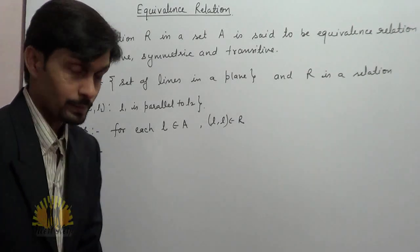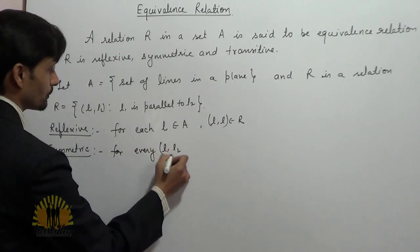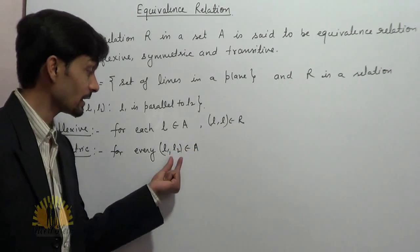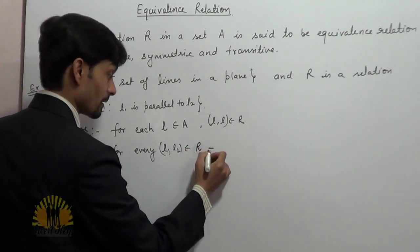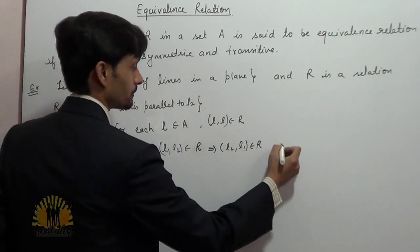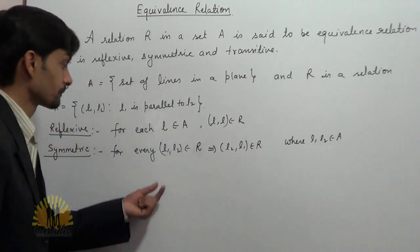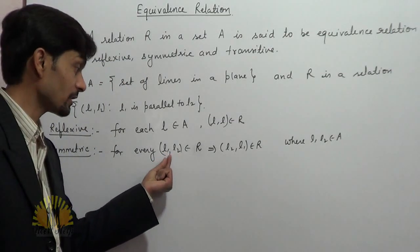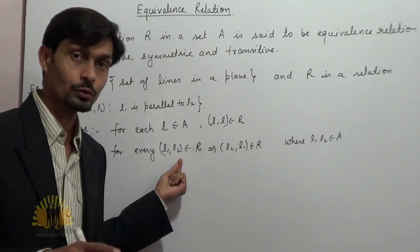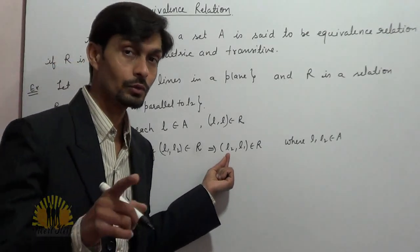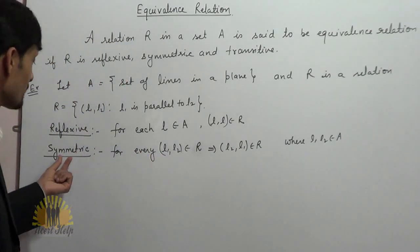L1 is parallel to L1, and similarly L2 is parallel to L2, so (L2,L2) must belong to R, where L1 and L2 are contained in A. Now checking symmetry: if (L1,L2) belongs to R, it means L1 is parallel to L2. Then (L2,L1) must also belong to R, because if L1 is parallel to L2, then L2 is also parallel to L1. So the relation R is symmetric as well.